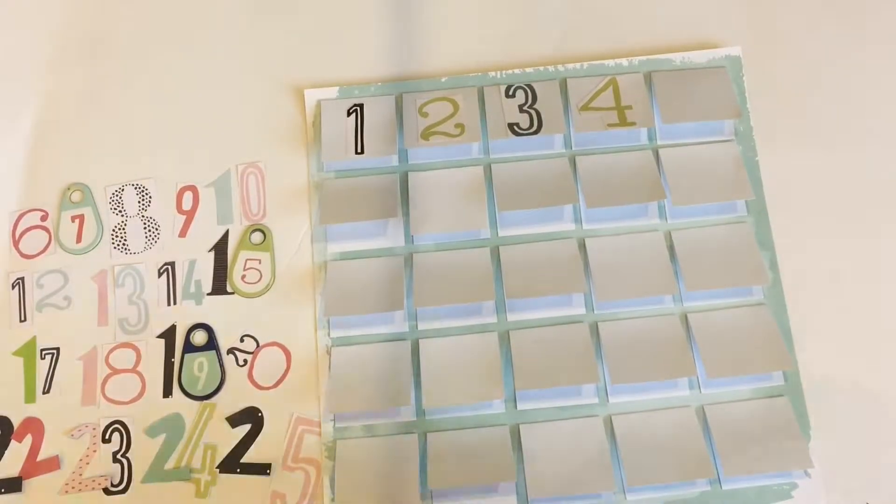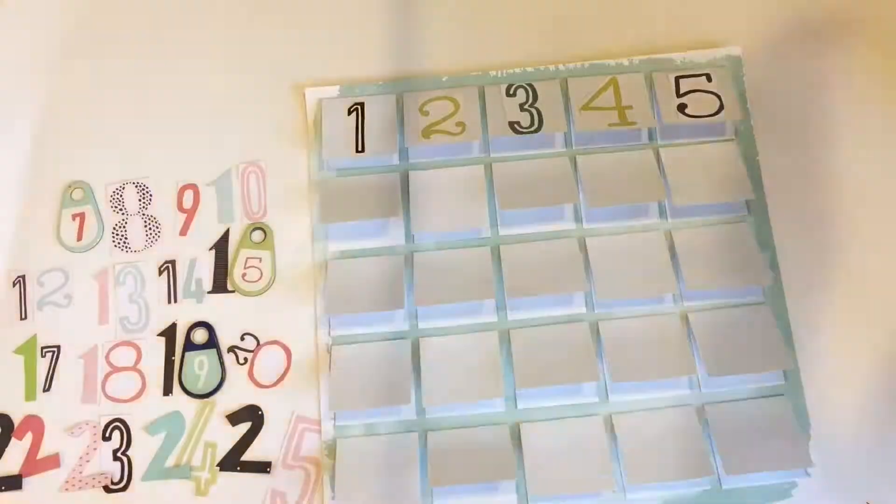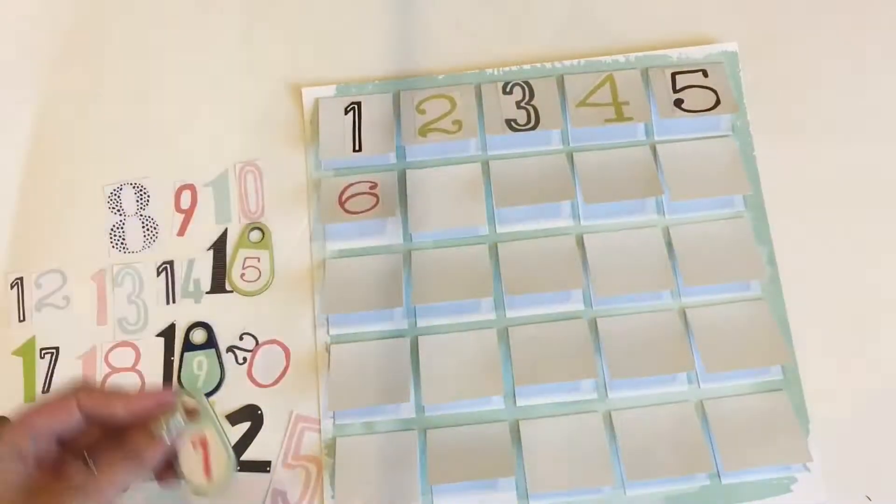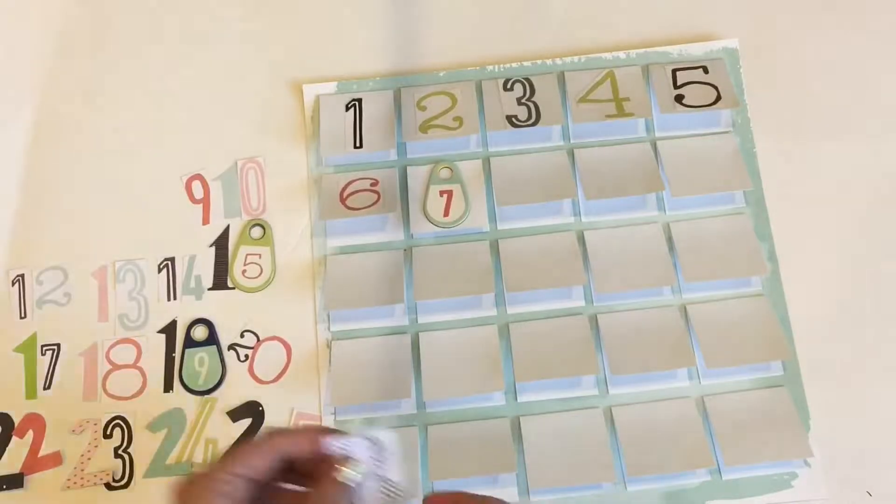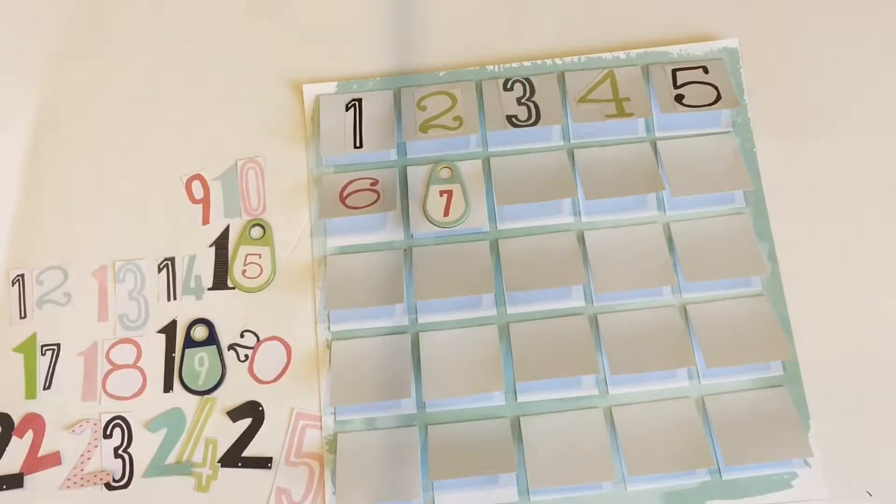I just used a glue stick, then I added the numbers which come from a cute 12 by 12 Dear Lizzy page. You just cut out the numbers that you want to use. Also the little chipboard tags are from Dear Lizzy.